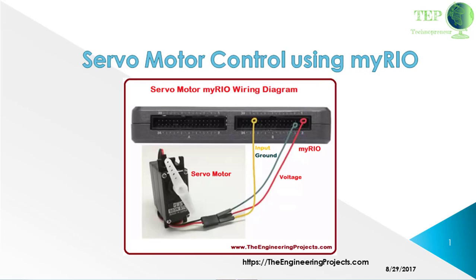Servo motor is an electronic device with a small output shaft. This shaft can be adjusted at different angles for different purposes. We can adjust the shaft by sending a signal usually known as a servo-coded signal. Servo motor is able to maintain a particular angle as long as it has the servo-coded signal at its input. It changes the angular position of its shaft with every change in the servo-coded signal applied at its input.